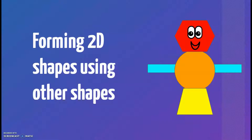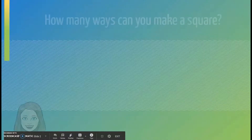He has a hexagon on the top of his head. He has a circle as his body, a trapezoid for the bottom, and two rectangles for his arms. So let's see what else we can explore and make using shapes.